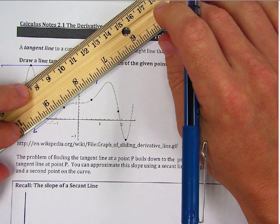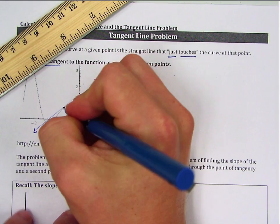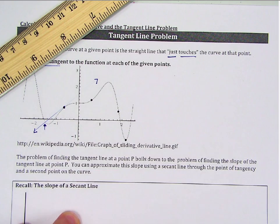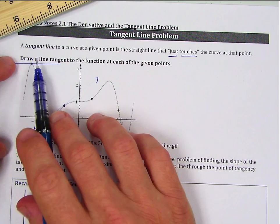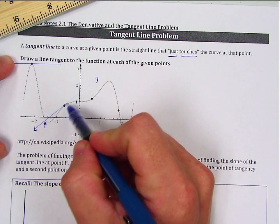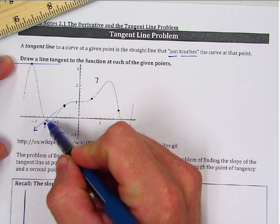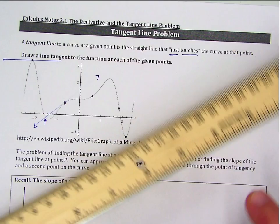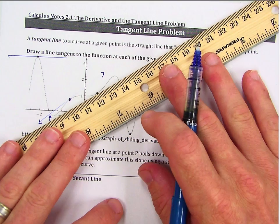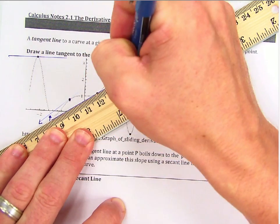You'll notice with this tangent line that it actually intersects the point once here, and there's actually an intersection right here. But the way this works is we want the line tangent to the function at a given point — this is the tangent line at this point because it just touches here, even though it may intersect the graph in another place.